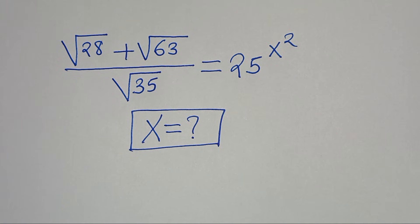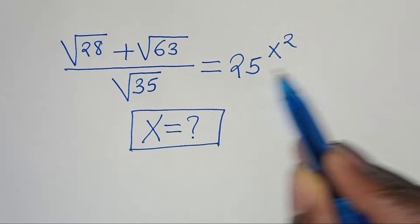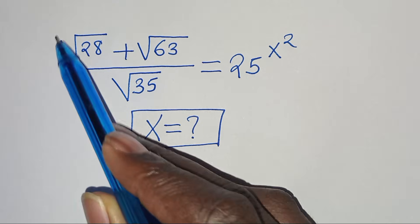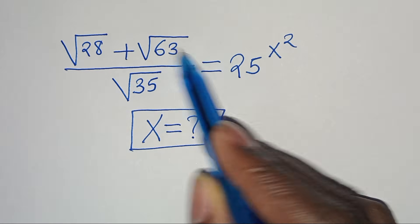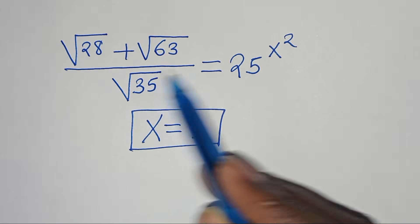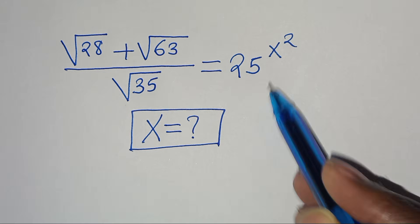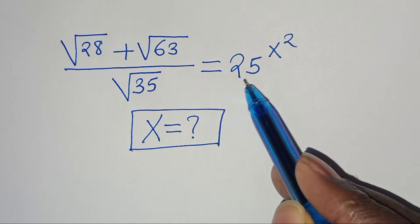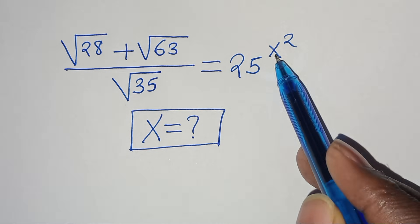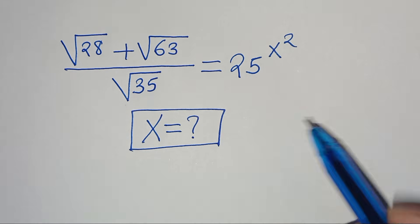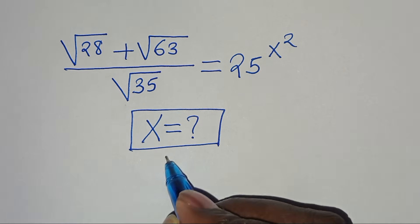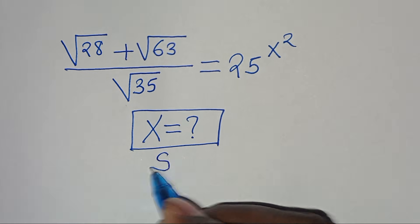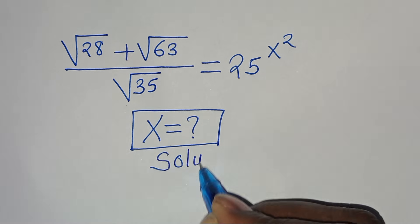Hello everyone, you are welcome to solve this nice exponential equation. We have the square root of 28 plus the square root of 63, divided by the square root of 35, and this is equal to 25 raised to the power of x squared. So we need to find the value of x. Now let's provide a solution.